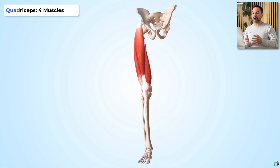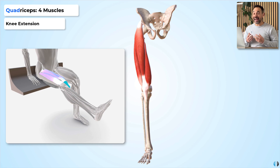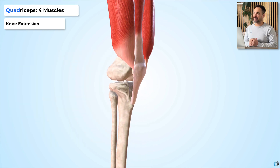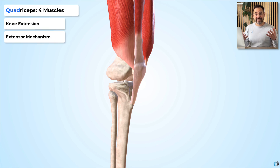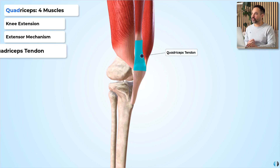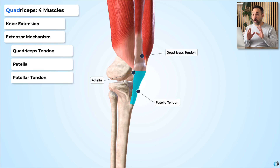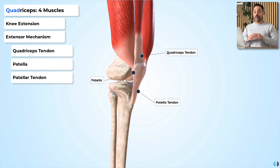Now let's talk about the action of the quadriceps muscles — which is to extend the knee. The quadriceps are the key muscle involved in this movement. Diving into the distal aspect of the quadriceps, we can talk about the extensor mechanism: the mechanism that allows for knee extension. This is made up of the quadriceps tendon, the patella, and the patellar tendon, and all three components together make up the extensor mechanism. For an individual to extend their knee, all three of these structures need to be intact.